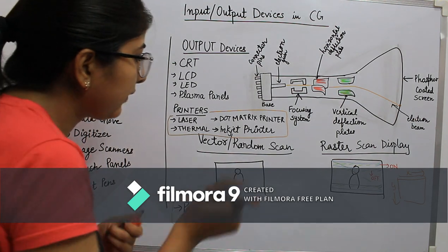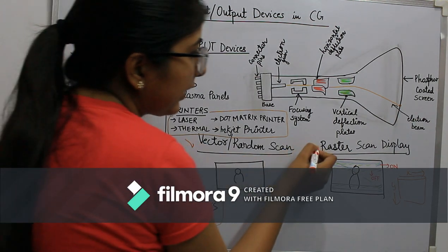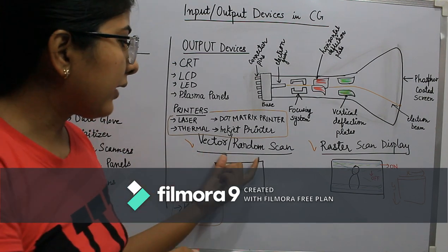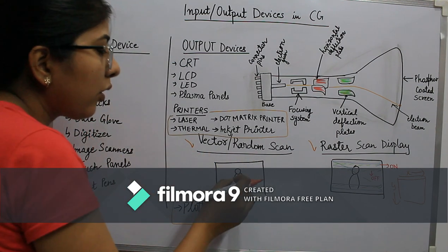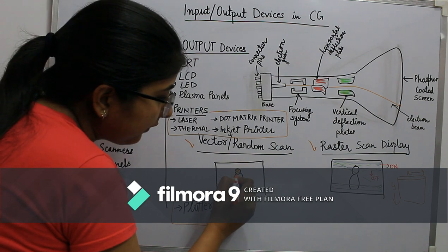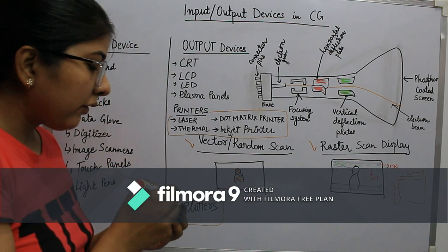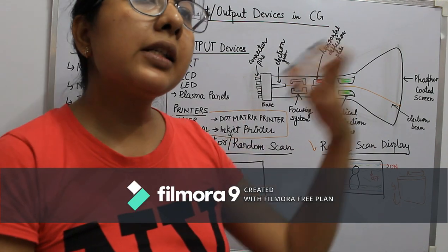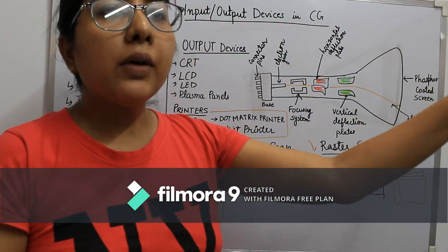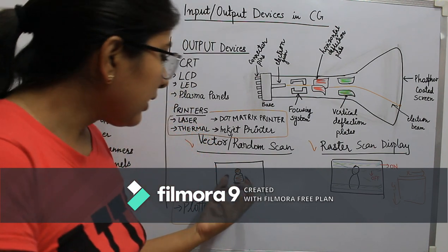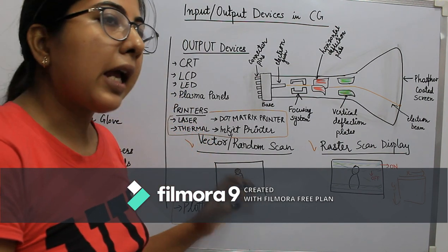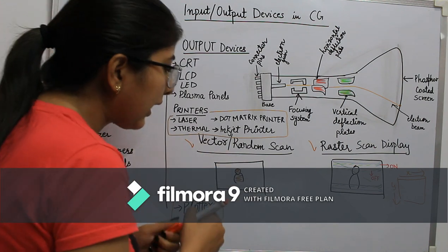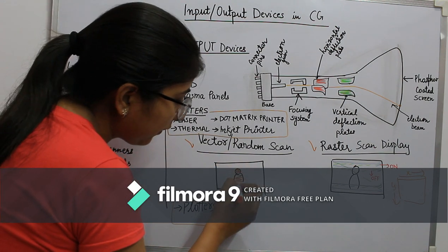The last concept is vector scan and random scan — how our screens display content. In vector scan or random scan, the object is populated exactly at its location — like direct access, where you know where the object is and you go directly to it. In random scan, you have the frame detail and location detail, and the output is plotted directly there.